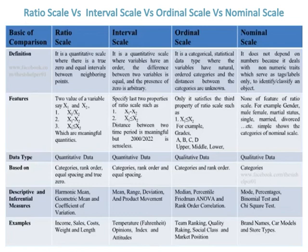In ordinal scale, only the third property of ratio scale is satisfied: x1 is less than or equal to x2. For example: A, B, C, D — or upper, middle, lower.